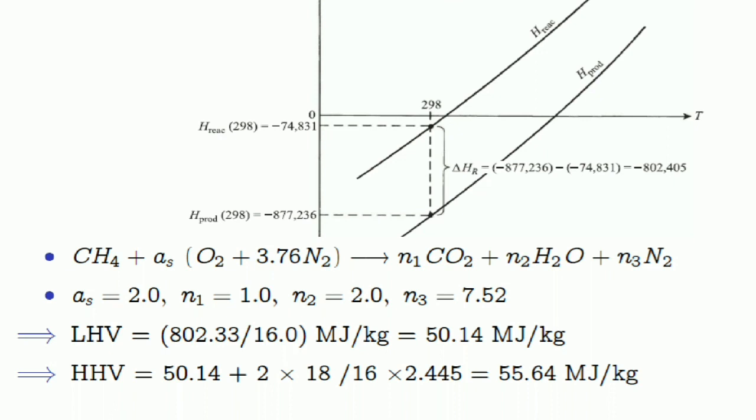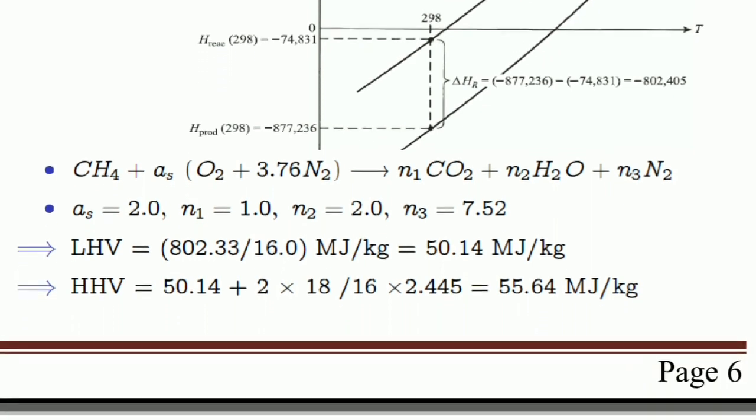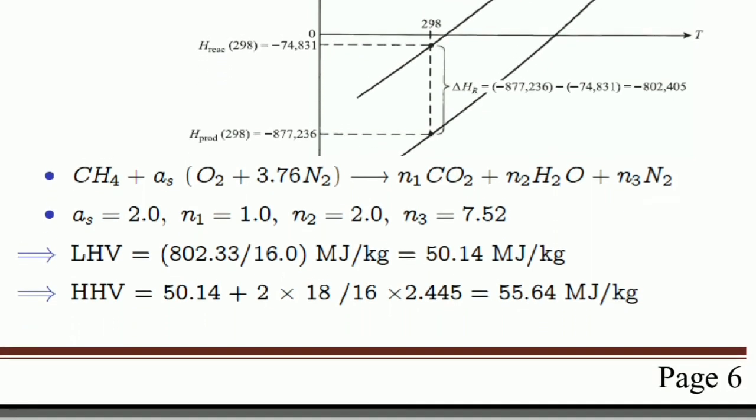From this, we can write the lower heating value equals 802 times 33 divided by 16 megajoules per kilogram, which equals 50.14 megajoules per kilogram, and the higher heating value equals 55.64 megajoules per kilogram.